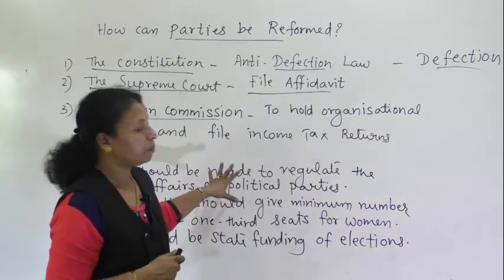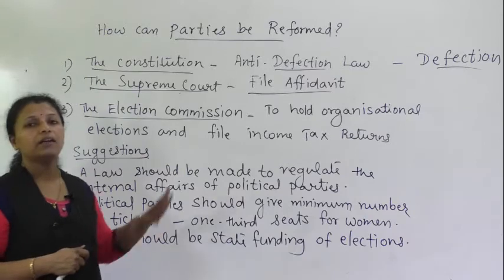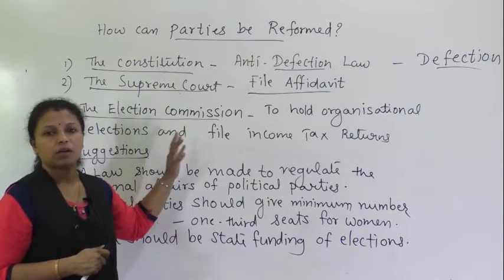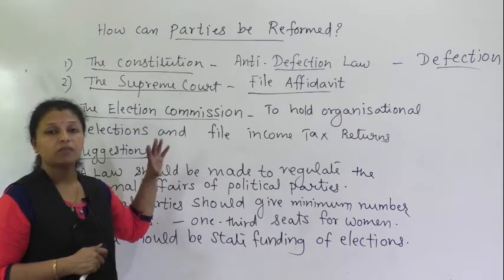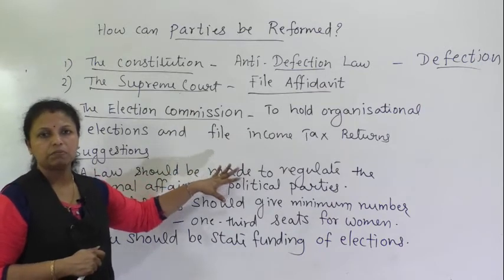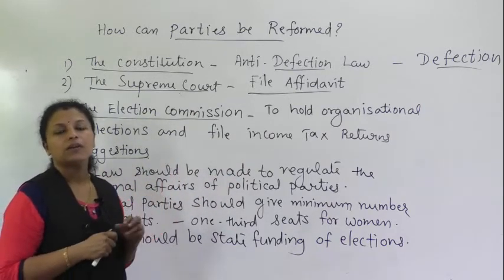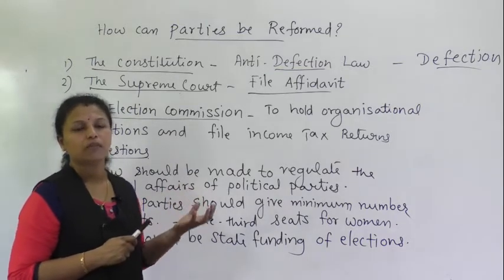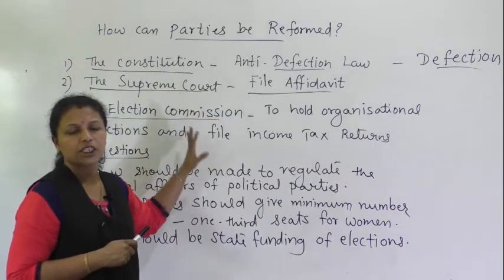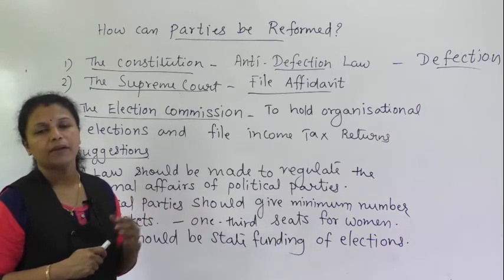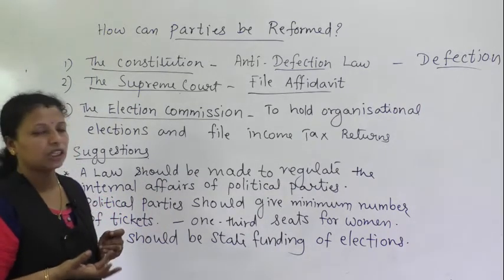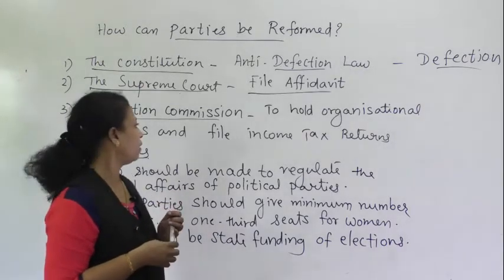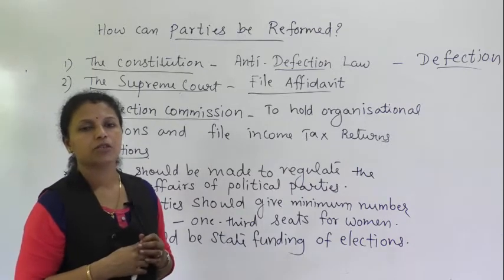This is a compulsory question — you can expect it in the exam: what are the reforms for political parties? If it is a five-mark question, write down these three mandatory reforms and some suggestions. If the question is specifically about mandatory or compulsory measures taken to reform political parties, then you must write the three important organizations and what they have done — anti-defection law, affidavit, and holding internal elections and income tax returns.